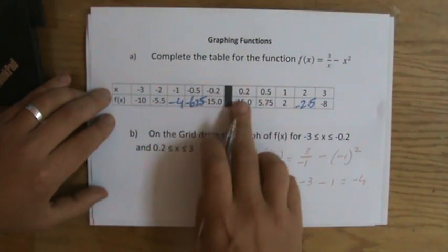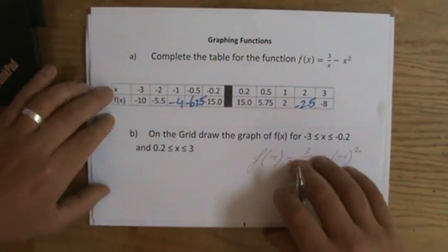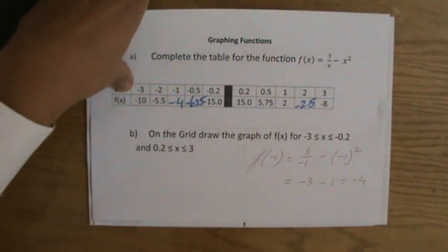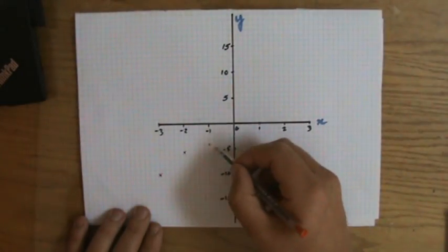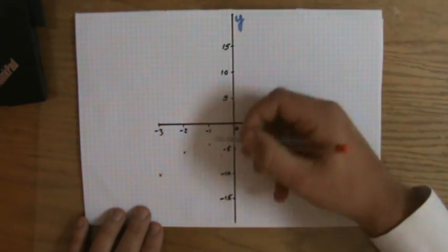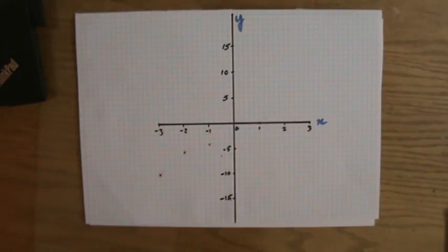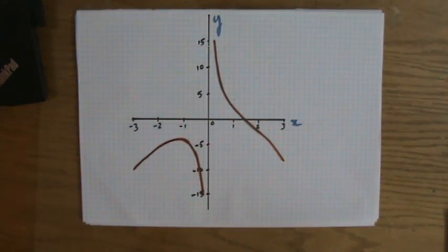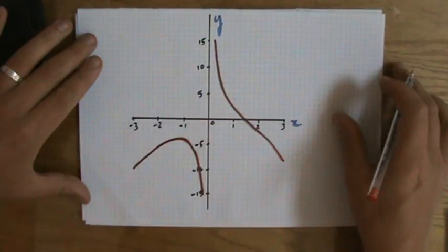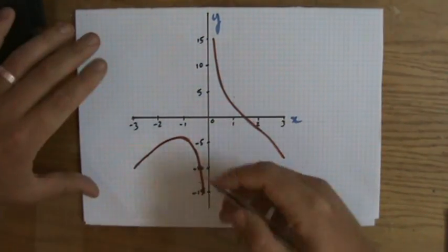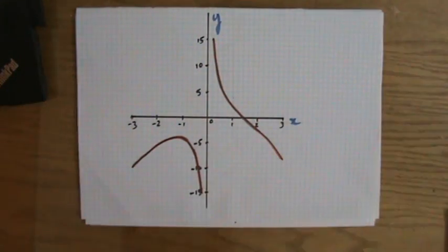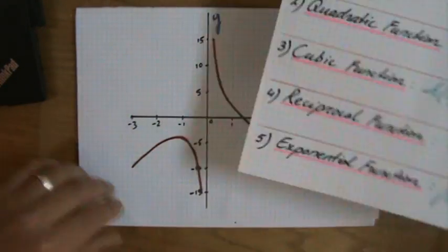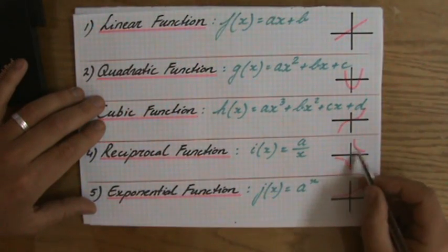You do the same thing with the same accuracy on the other side — I've done that already just to save time. As you can see, I have some sort of curve here and it goes down, and I get something there as well. After you graph it, a few things I want to say. Very important: first of all, you do not connect the two parts. This is a reciprocal function, and all reciprocal functions consist of two parts.